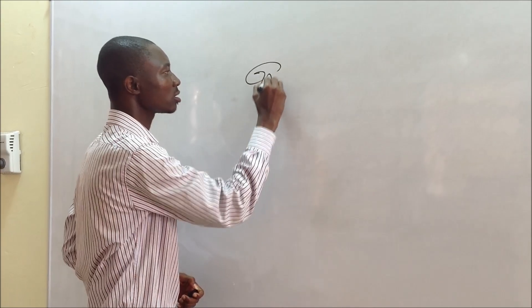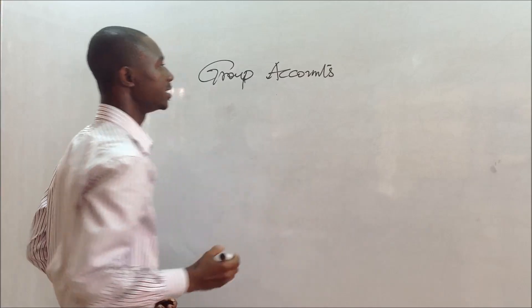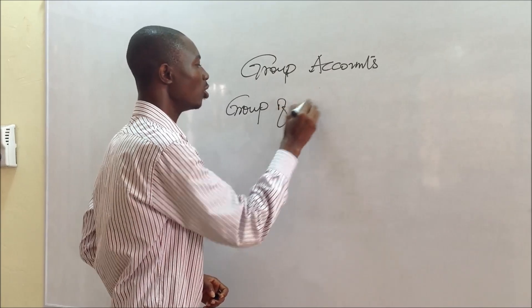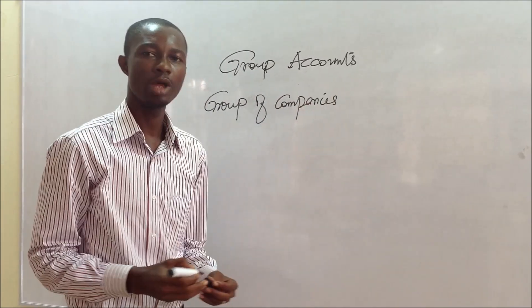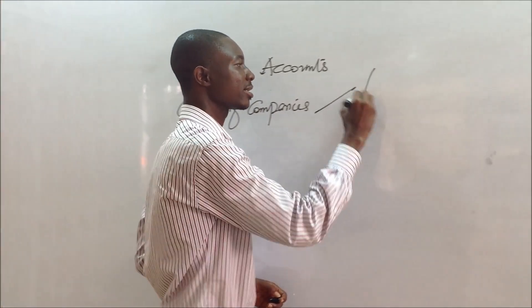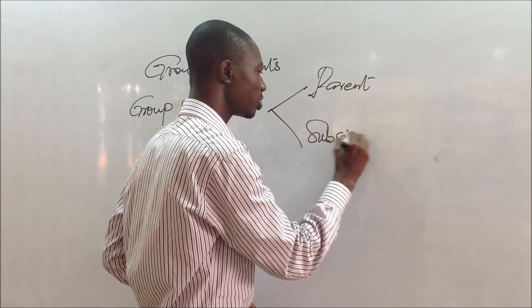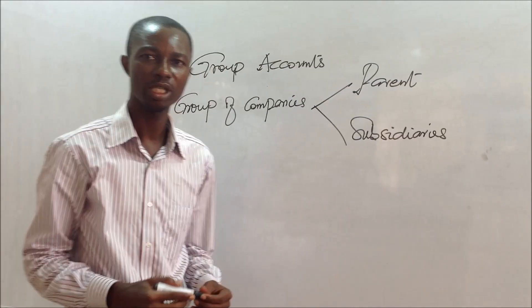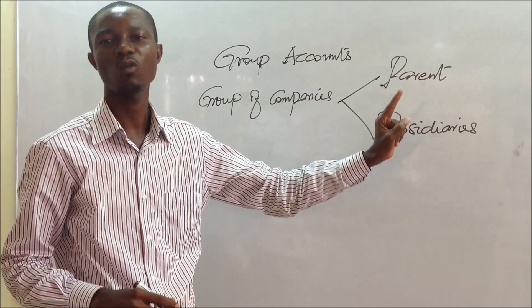Today we are looking at Group Accounts, and by Group Accounts it means that we are referring to a group of companies. There will be a group of companies when there is what we call a parent and subsidiaries. It could be one subsidiary, it could be two or more subsidiaries, but there must be a parent and there must be at least one subsidiary.